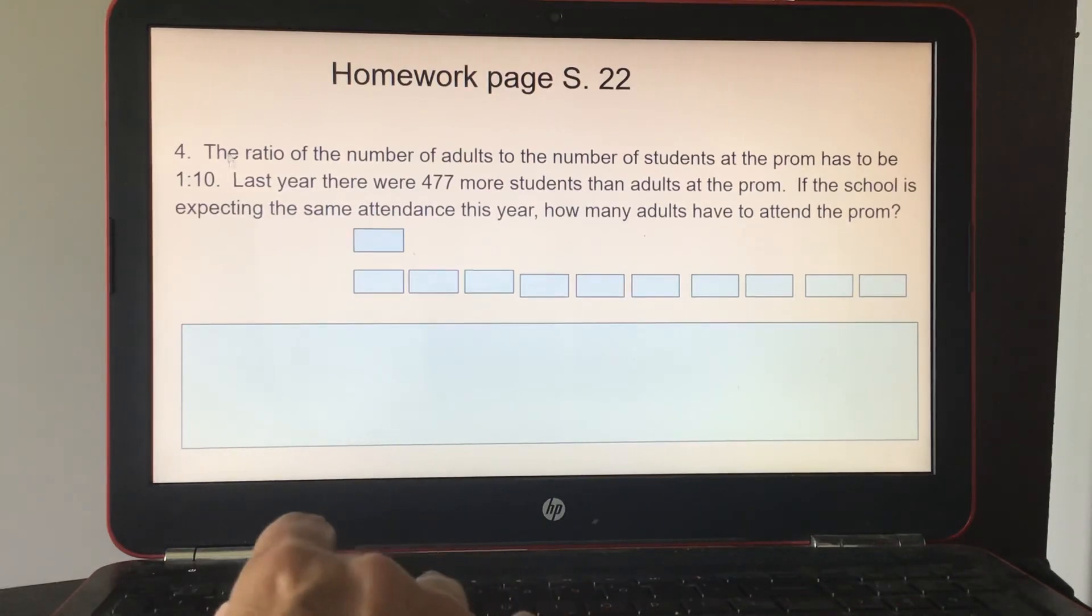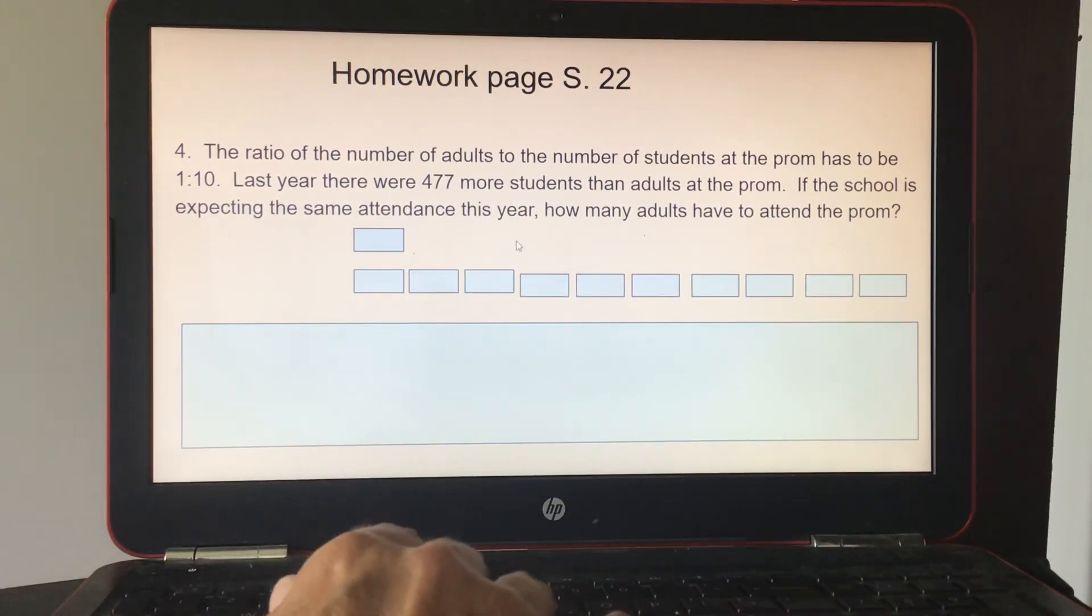This one's kind of tricky, that's why I'm going over this. The ratio of the number of adults to the number of students at the prom has to be 1 to 10, okay? Last year there were 477 more students than adults at the prom. If the school is expecting the same attendance this year, how many adults have to attend the prom? So this one, because this unit is the adult to student, just kind of push that over here, and you're going to actually count what boxes are left then. 1, 2, 3, 4, 5, 6, 7, 8, 9. So you're going to divide 477 by 9 to get to your unit. And then it will tell you how many adults attended the prom. Okay, thank you.